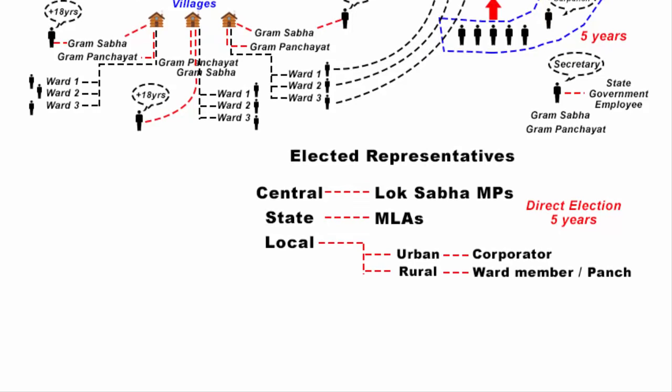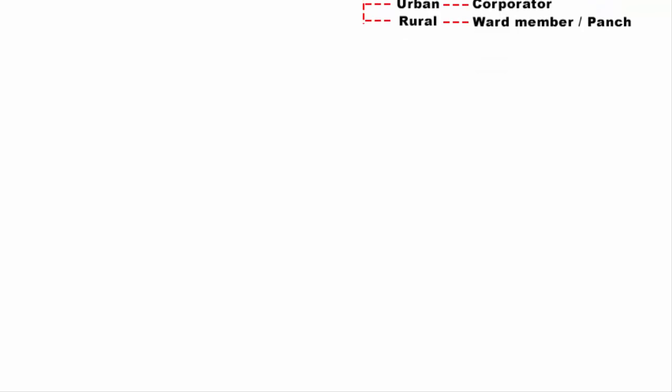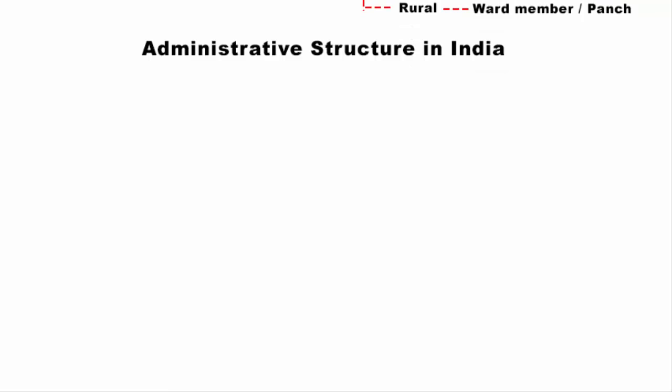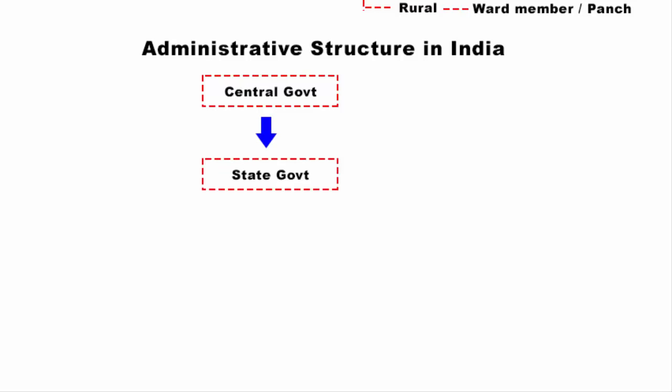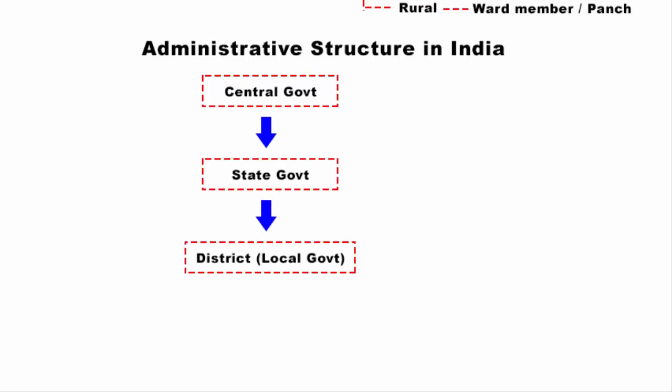Let me quickly summarize the administrative structure in India. At the top we have the central government, below that the state government, and under the state government we have the local government, which starts at district level. Every state is divided into a certain number of districts. In a district we have cities, towns and villages, categorized under urban and rural areas.